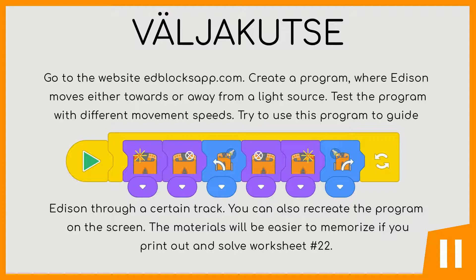Challenge: Go to the website edbloxapp.com. Create a program where Edison moves either towards or away from a light source. Test the program with different movement speeds. Try to use this program to guide Edison through a certain track. You can also recreate the program on the screen. The materials will be easier to memorize if you print out and solve worksheet number 22.